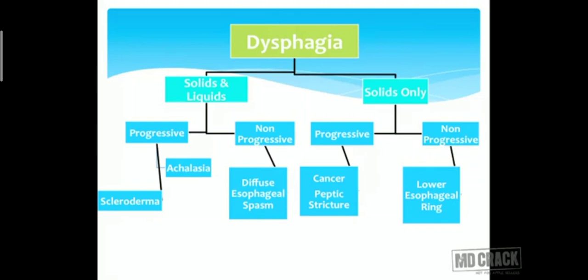Dysphagia can be for solids and liquids both, or only solids, and we can divide it into progressive or non-progressive. Progressive dysphagia for both solids and liquids is seen in achalasia and scleroderma. Non-progressive dysphagia for both can indicate diffuse esophageal spasm. For solids only, progressive dysphagia usually suggests stricture or malignancy causing narrowing, while non-progressive suggests an esophageal ring.